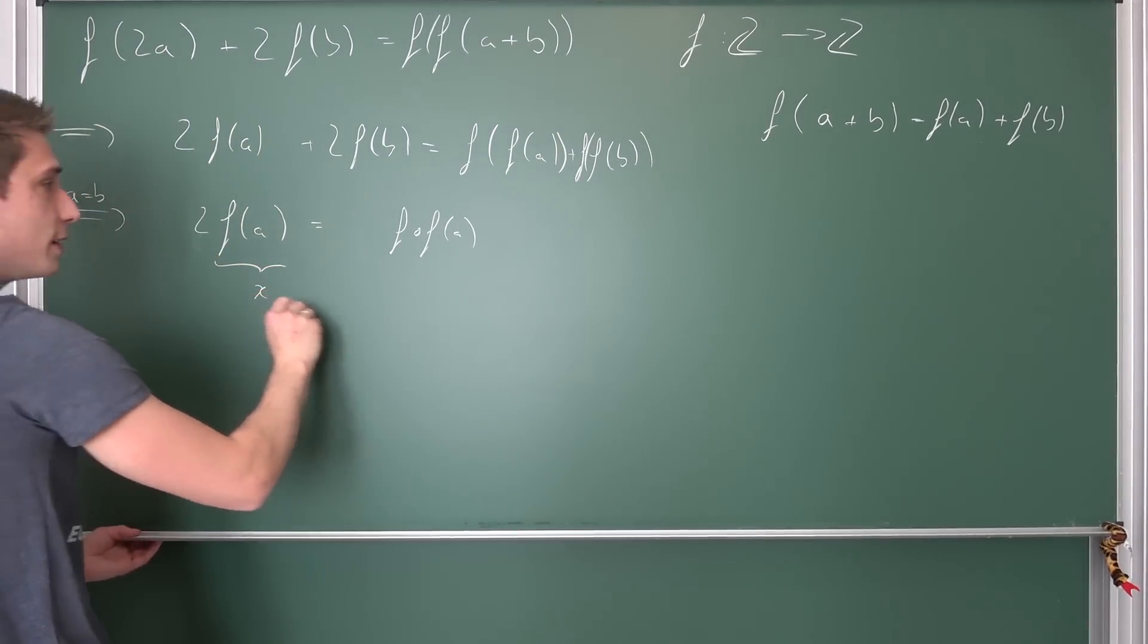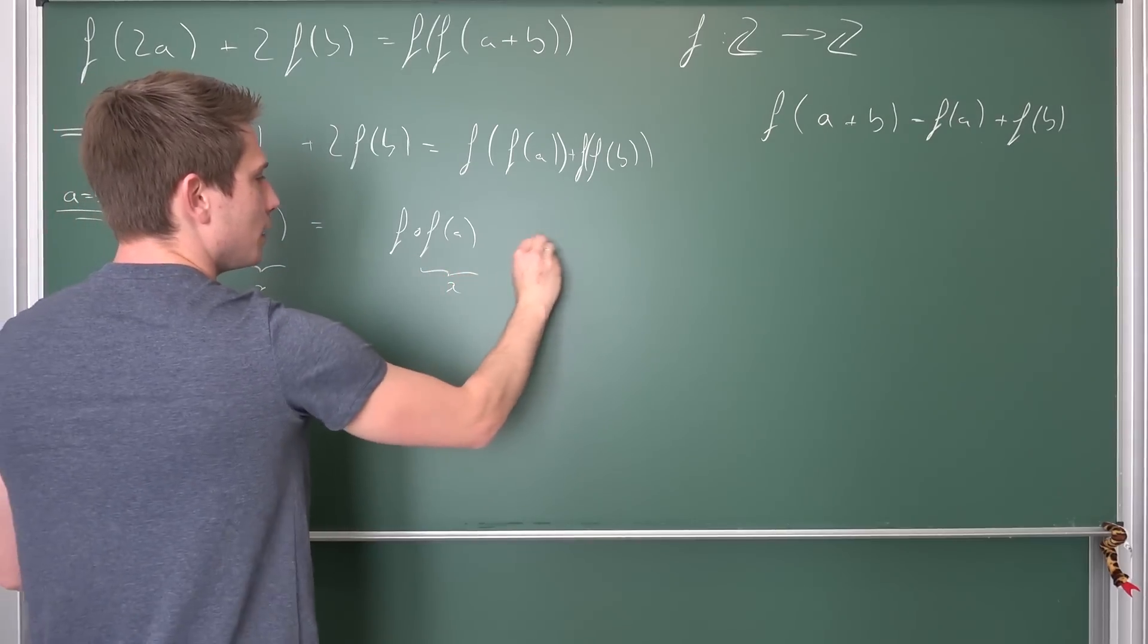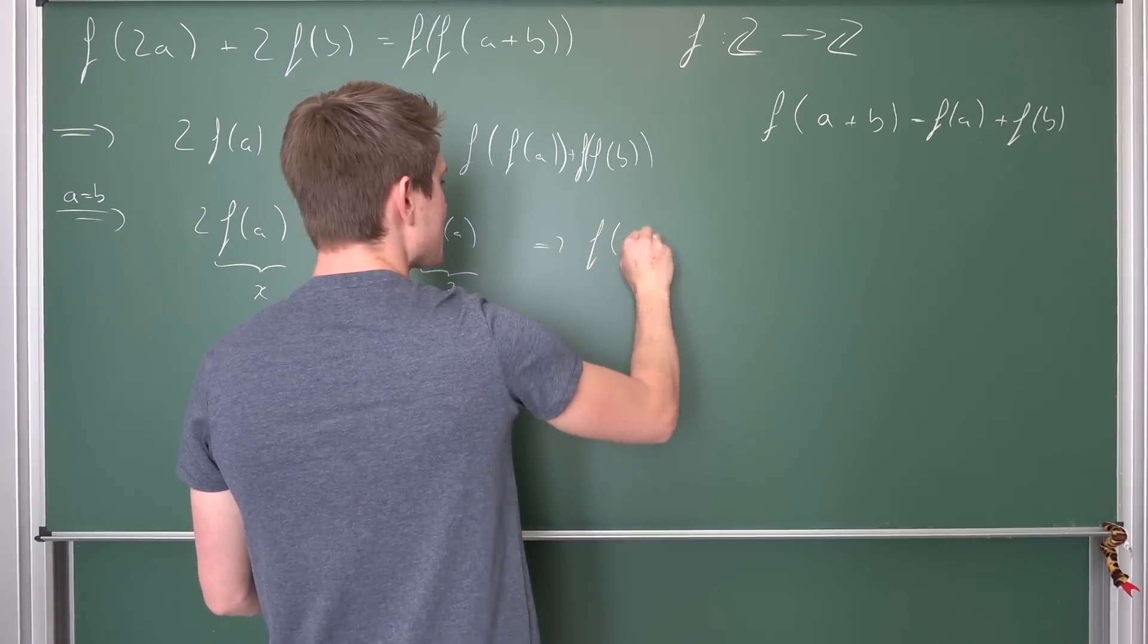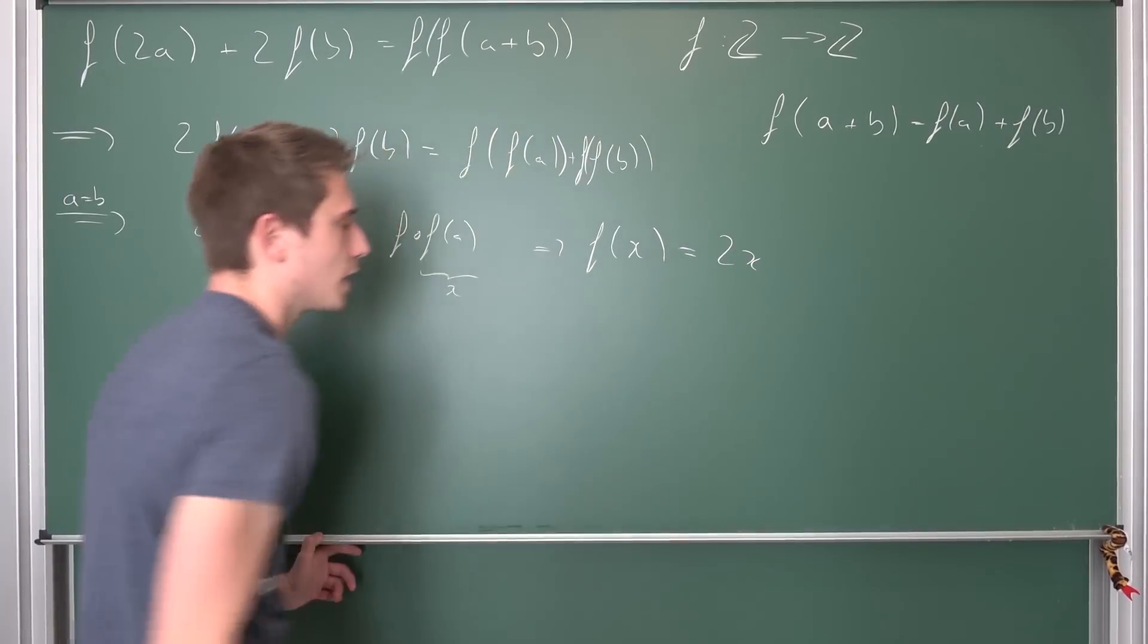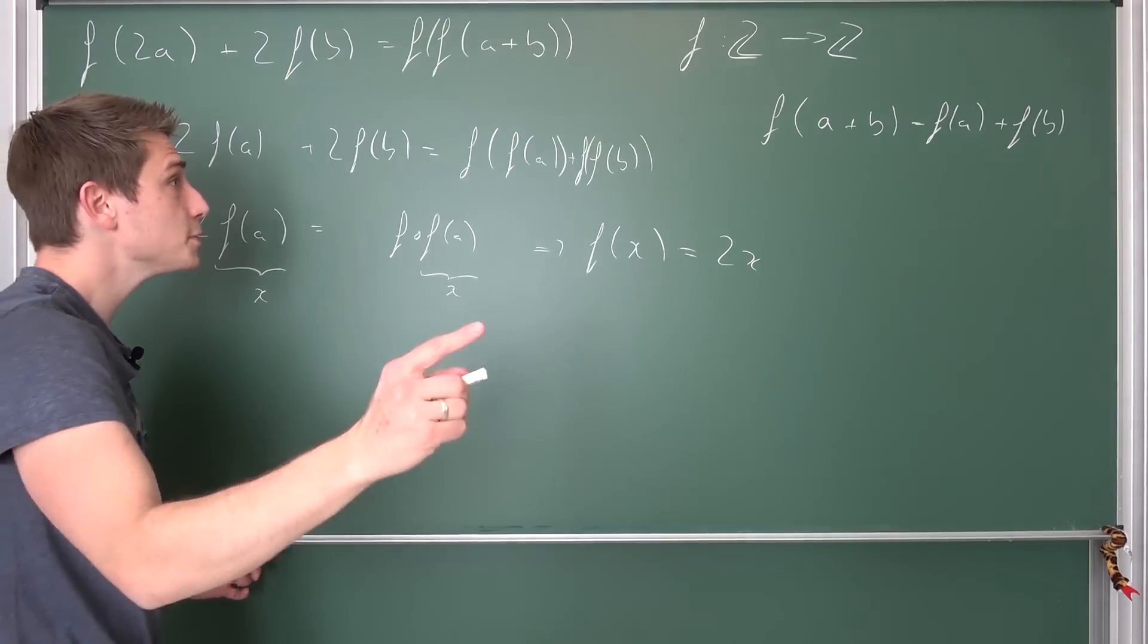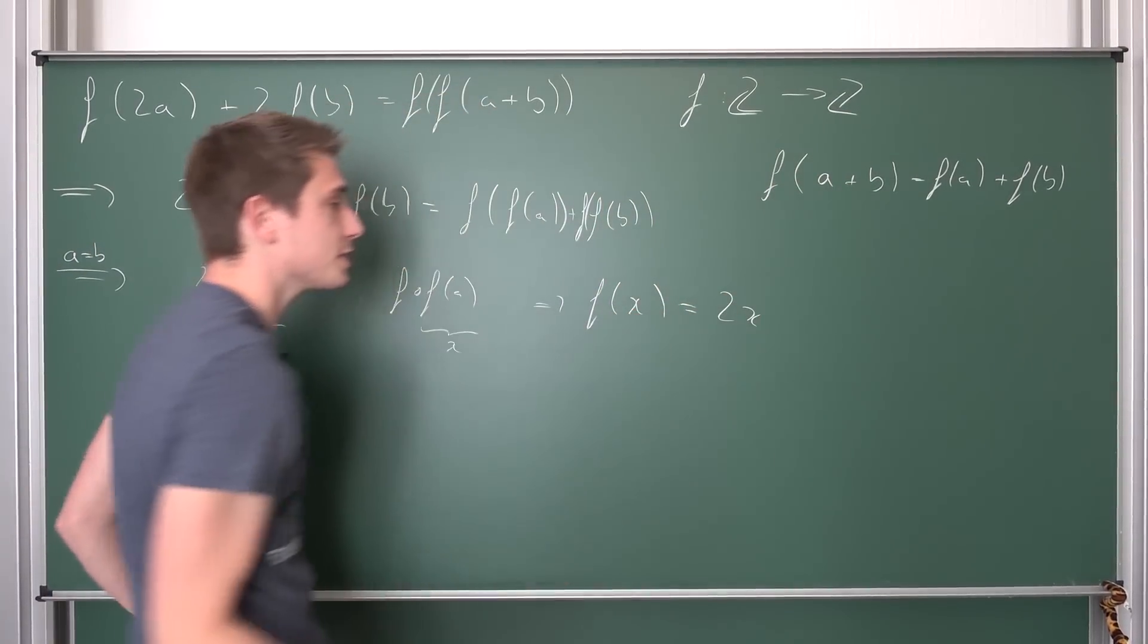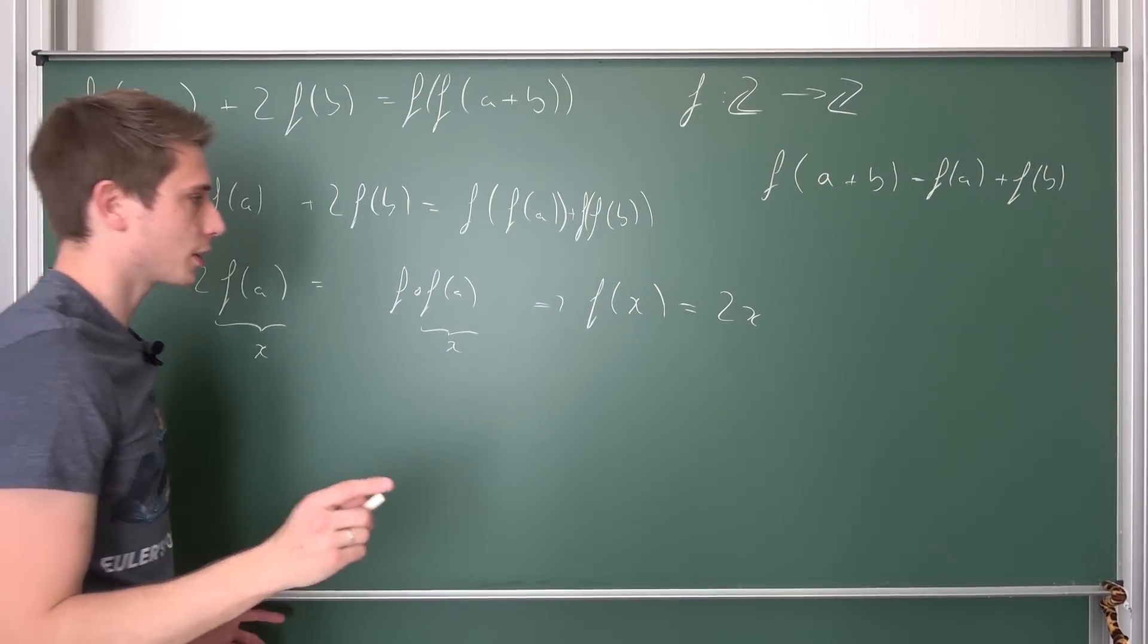This thing is just some kind of x value, for example. Meaning overall that f(x) is thus equal to 2 times x. If we suppose that this is a homomorphism, then this does work out.